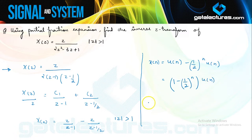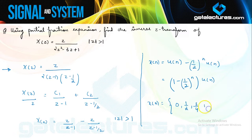You can keep different values of N starting from 0, and you can find out this series is going to be 0, 1/2, 3/4, 7/8, and so on. This is how we perform inverse Z-transform using partial fractions.